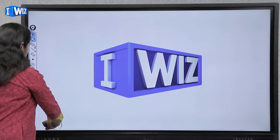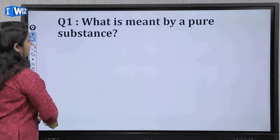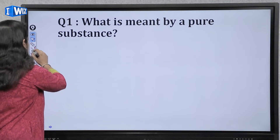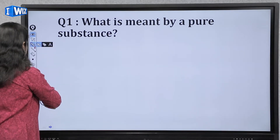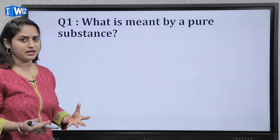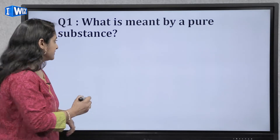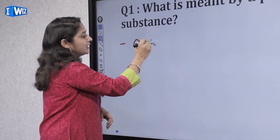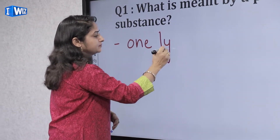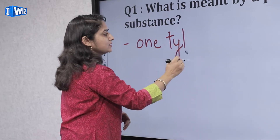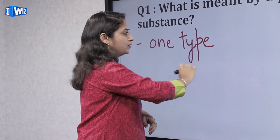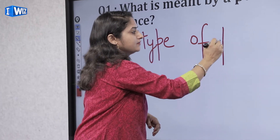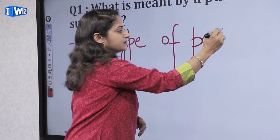So, in this chapter, the first question is: What is meant by pure substance? Very basic question ki pure substance kya hai? Toh pure substance woh hai jis mein siraf one type of particles hai. Bohat saari cheez nahi hai, siraf ek cheez hai — one type of particles. That is called pure substance.